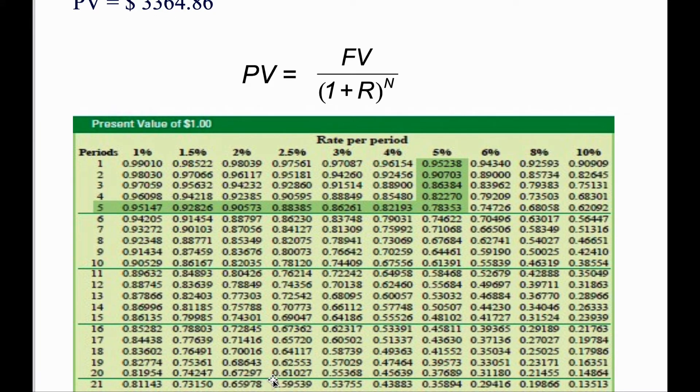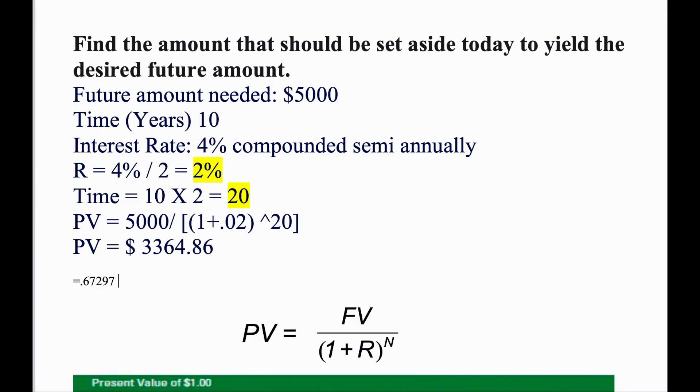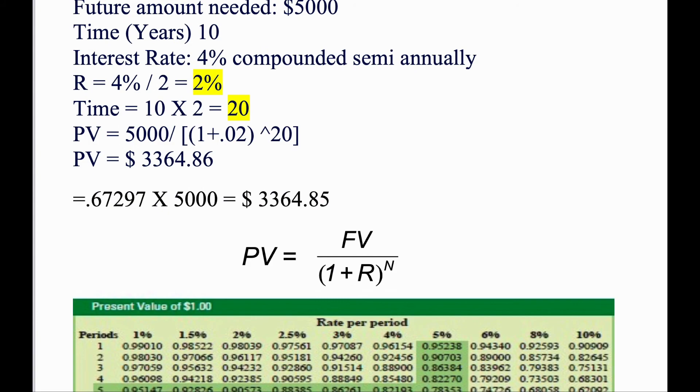So here you have 0.67297. This number, we will multiply it to our future value needed. So in your calculator, you should get the value of 3,364.85.